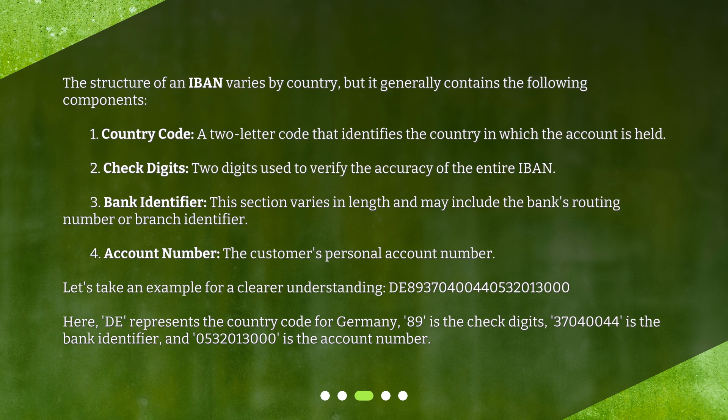Let's take an example for a clearer understanding. DE89370400440532013000. Here, DE represents the country code for Germany. 89 is the check digits. 37040044 is the bank identifier. And 0532013000 is the account number.